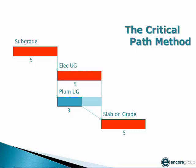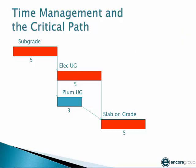Let's talk about how the critical path is calculated. The computer will take this sequence of activities and start on day one — showing the subgrade starts on Monday, for example, and finishes on day five or Friday. That means subsequent activities can start on day six. The electrician, scheduled for five days, would finish on Friday. The plumber, scheduled for three days, would finish on days six, seven, and day eight. If both activities are done by day 10, the slab on grade can start on day 11 and finish on day 15, the third week.